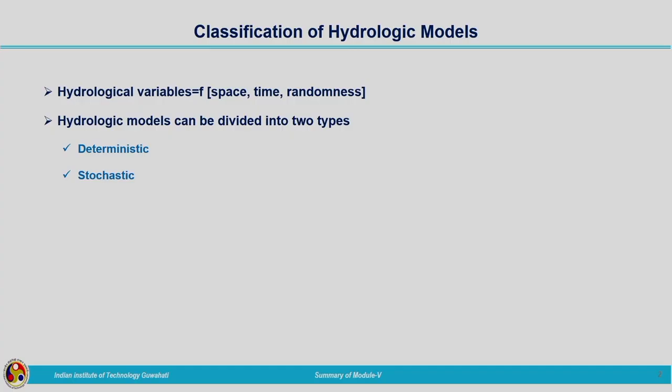We started with the classification of hydrologic models. When classifying hydrologic models, we classified hydrological variables as a function of space, time, and randomness. Based on space, it is classified as one-dimensional, two-dimensional, and three-dimensional. With respect to time, we classify it as steady or unsteady, and certain variables such as rainfall carry uncertainties.